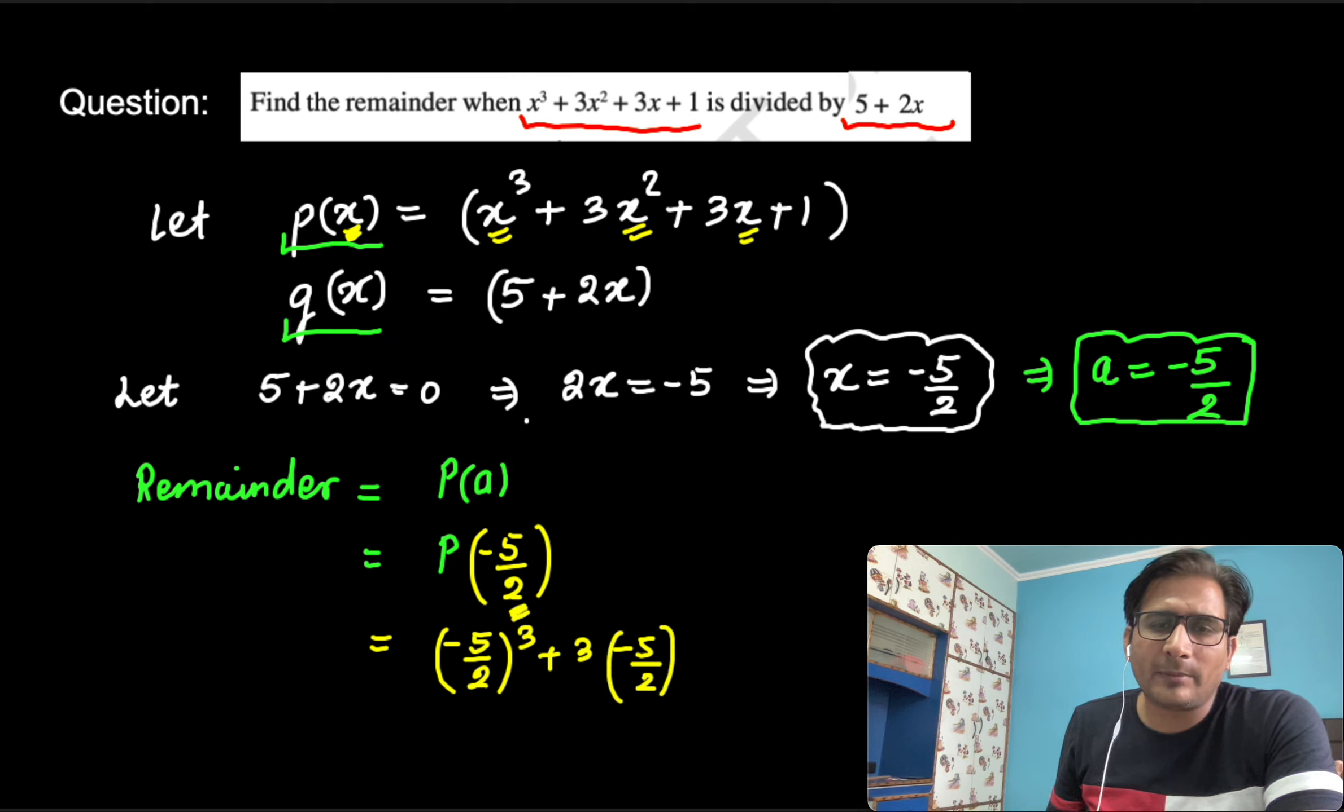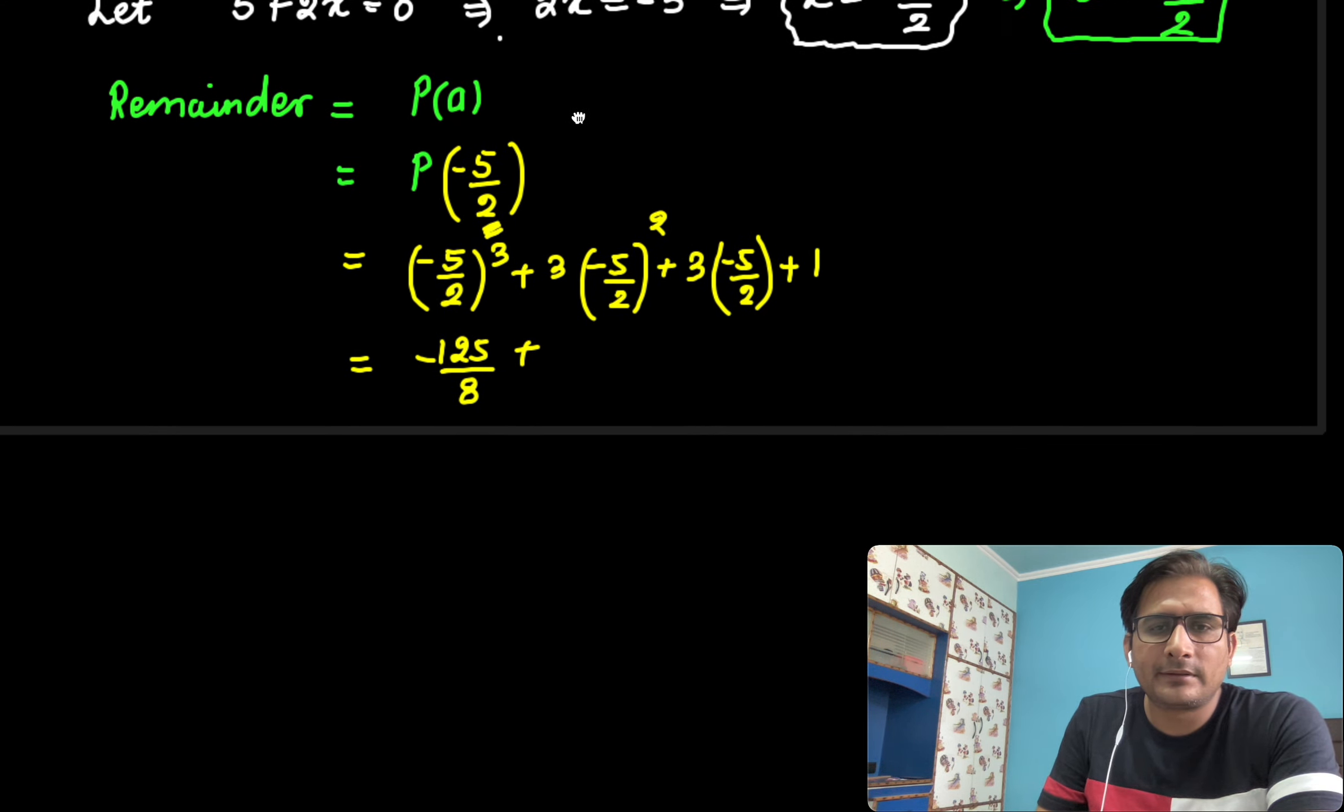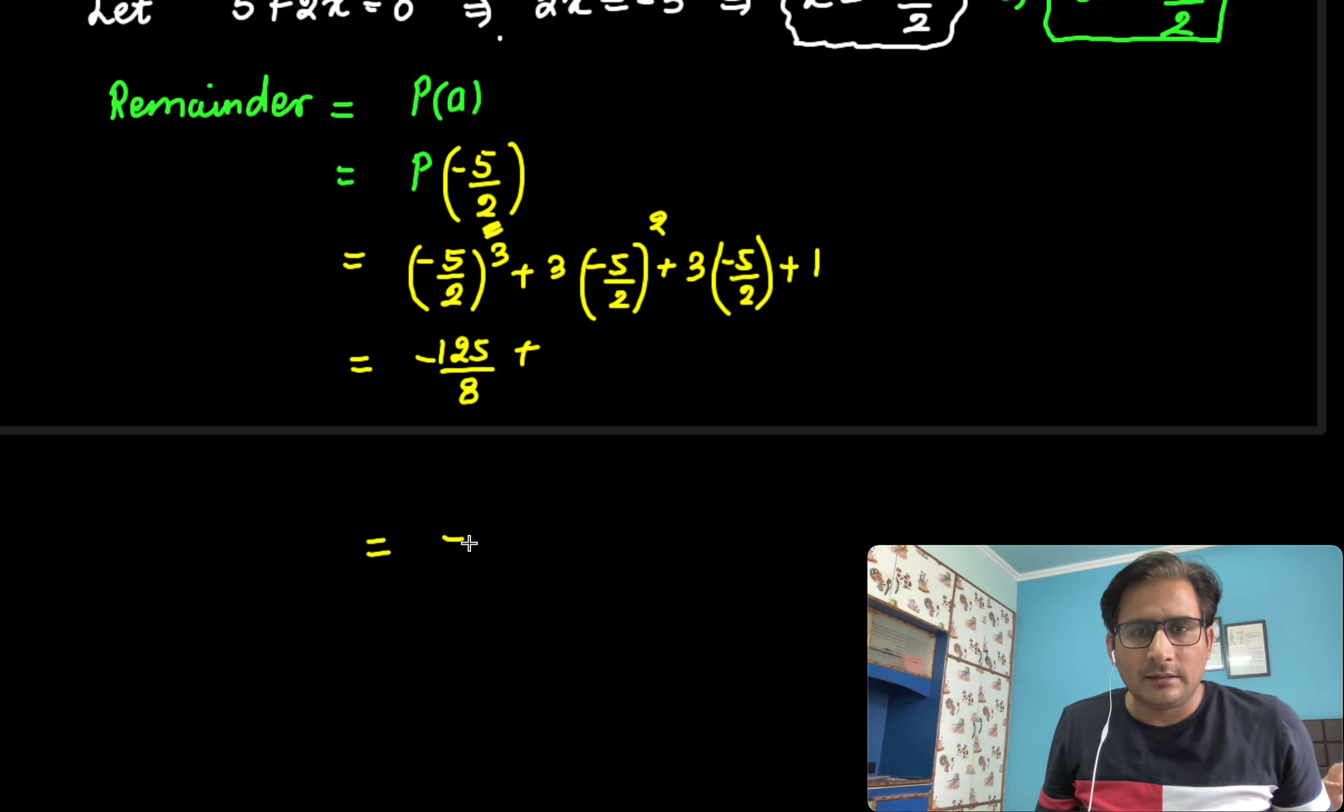If you simplify this expression, then you will get the remainder. It can be written as minus 125 by 8. Let me simplify it. After simplification, it comes out to be minus 27 by 8.